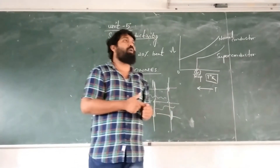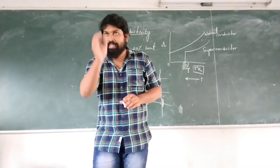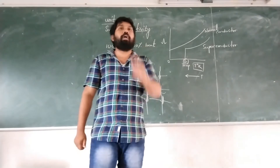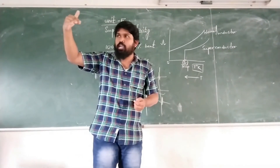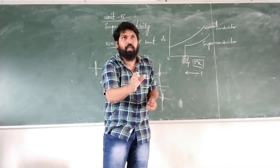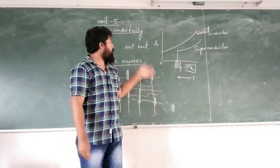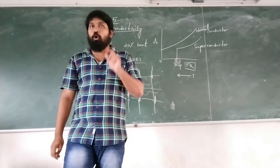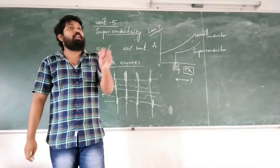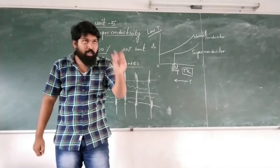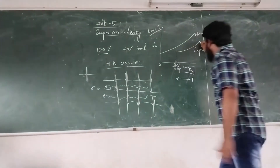So, if definition is allowed — superconductivity is the phenomenon in which the electrical resistance of a specimen of metal or alloy suddenly drops to zero at a critical temperature. So superconductivity is a low-temperature phenomenon.